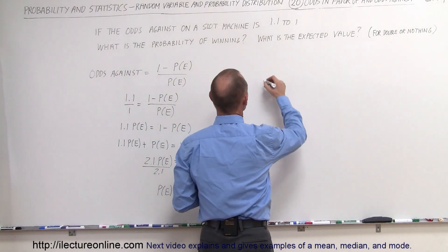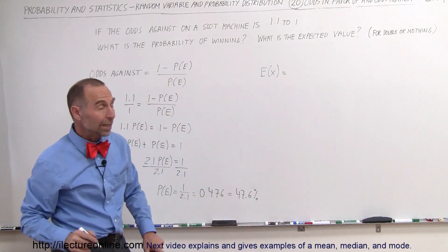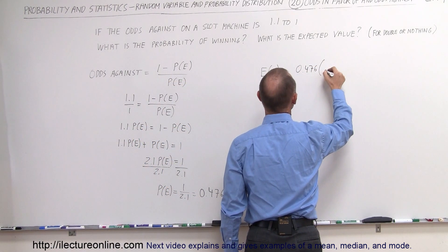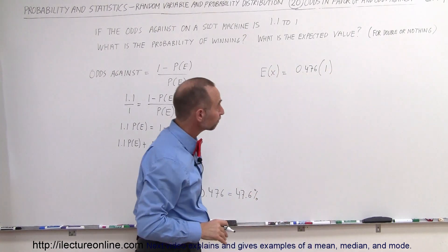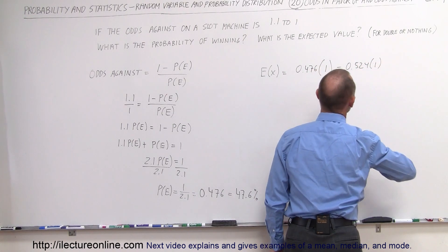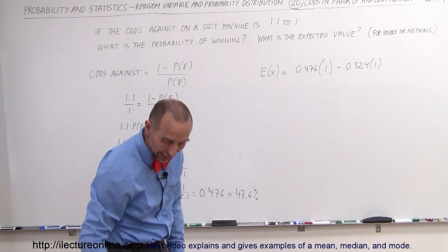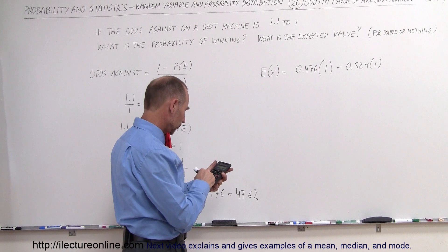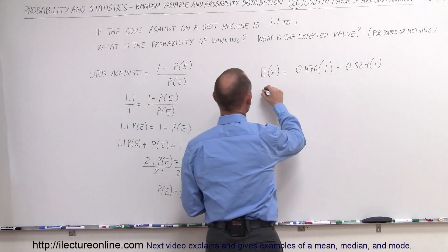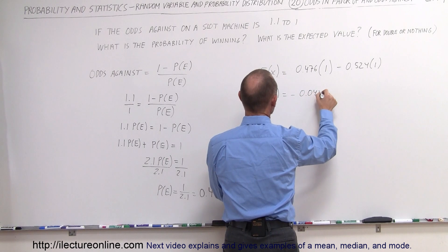So the expected value, the expected value for X is equal to, if that's the probability of winning, we can say it's 0.476 times 1 quarter if you win, and then a minus 0.524 times 1 if you were to lose. There's a slightly higher probability that you will lose. So what will that be added together? So 0.476 minus 0.524, so the expected value in that case would be equal to a minus 0.048.